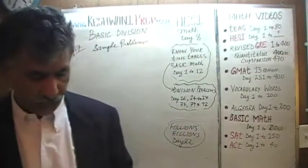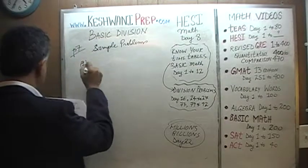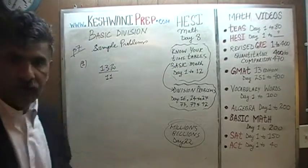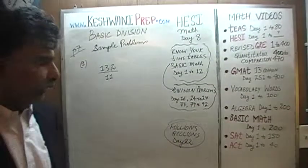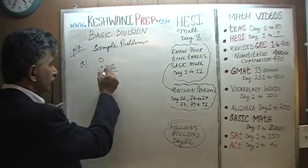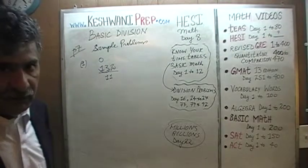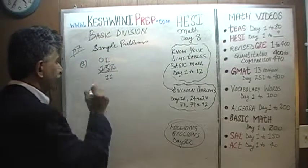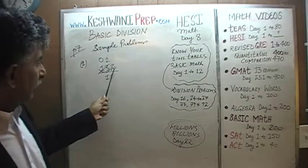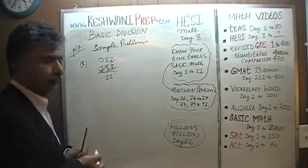For example, sample problem number 1: they are asking us to do 132 over 11. Let's get going — you will see it goes very quickly. How many 11s does 1 have? 1 has no 11. That 1 goes and joins the 3 and becomes 13. How many 11s does 13 have? 13 has 1 eleven. After we use up 11 from the 13, we have a remainder of 2. That remainder of 2 goes and joins this 2 and becomes 22, and 22 has 2 elevens. That's it — we are done. The answer is 12.